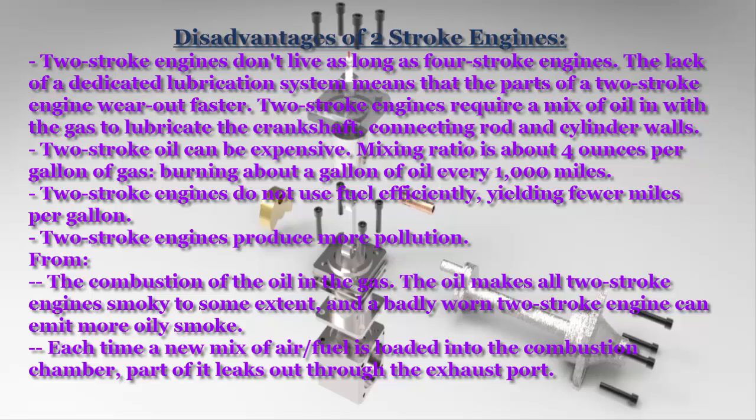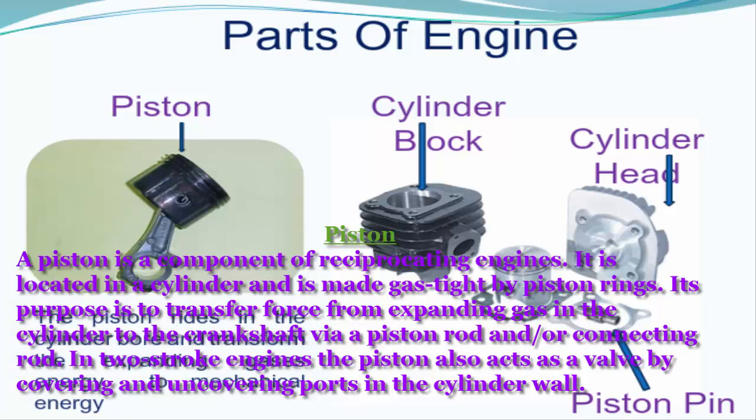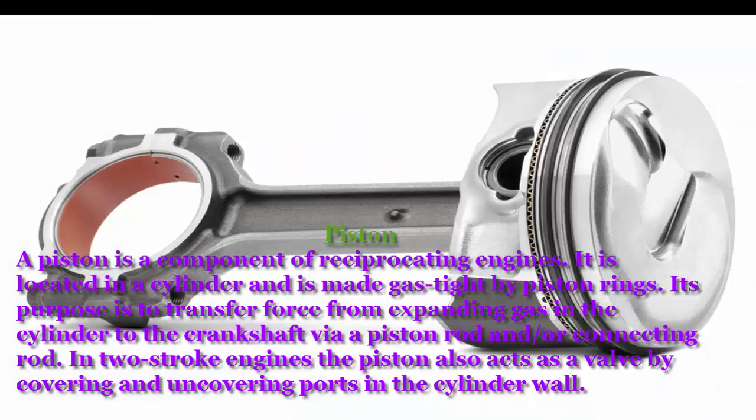Components of reciprocating engines — Piston: A piston is located in a cylinder and is made gas-tight by piston rings. Its purpose is to transfer force from expanding gas in the cylinder to the crankshaft via piston rod and/or connecting rod. In two-stroke engines, the piston also acts as a valve by covering and uncovering ports in the cylinder wall.